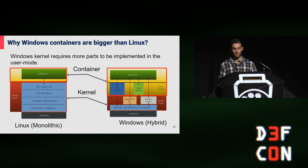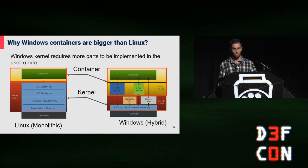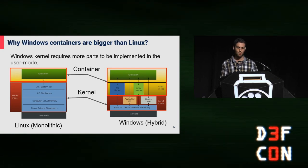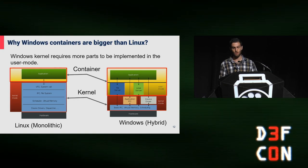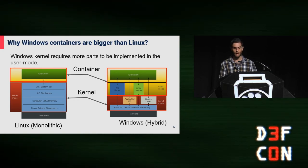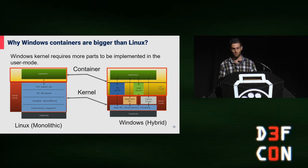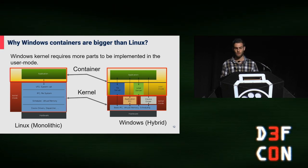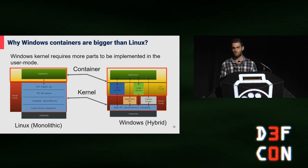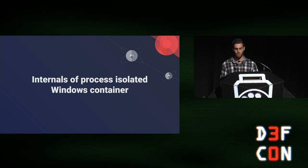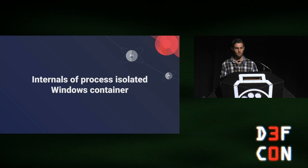Unlike Linux containers which don't contain any system processes, the reason lies in the differences between Linux and Windows kernel architecture. Both run from user mode only. Linux kernel is monolithic — all its basic functionality is implemented in the kernel. Unlike Windows, where some functionality is implemented in user mode while others are in the kernel. Therefore, Windows containers contain system services such as svchost. Let's deep dive into how process isolated containers are implemented.